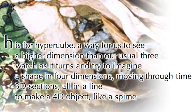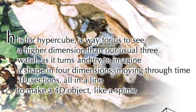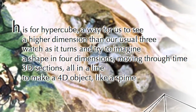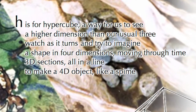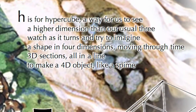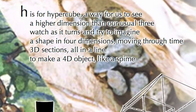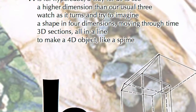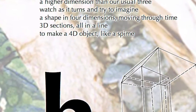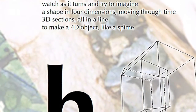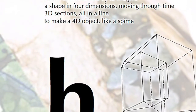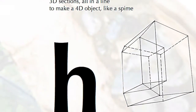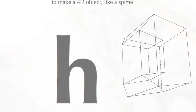H is for Hypercube — a way for us to see a higher dimension than our usual three. Watch as it turns and try to imagine a shape in four dimensions moving through time. 3D sections all in a line to make a 4D object, like a spime.